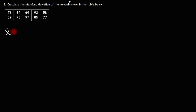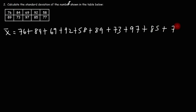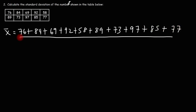So let's begin by calculating the sample mean. Let's take the sum of all the numbers: 76 plus 84 plus 69 plus 92, and so forth. We're going to take the sum of all of these numbers and then divide it by the size of the sample. In that sample, we have 10 numbers, so n is 10.